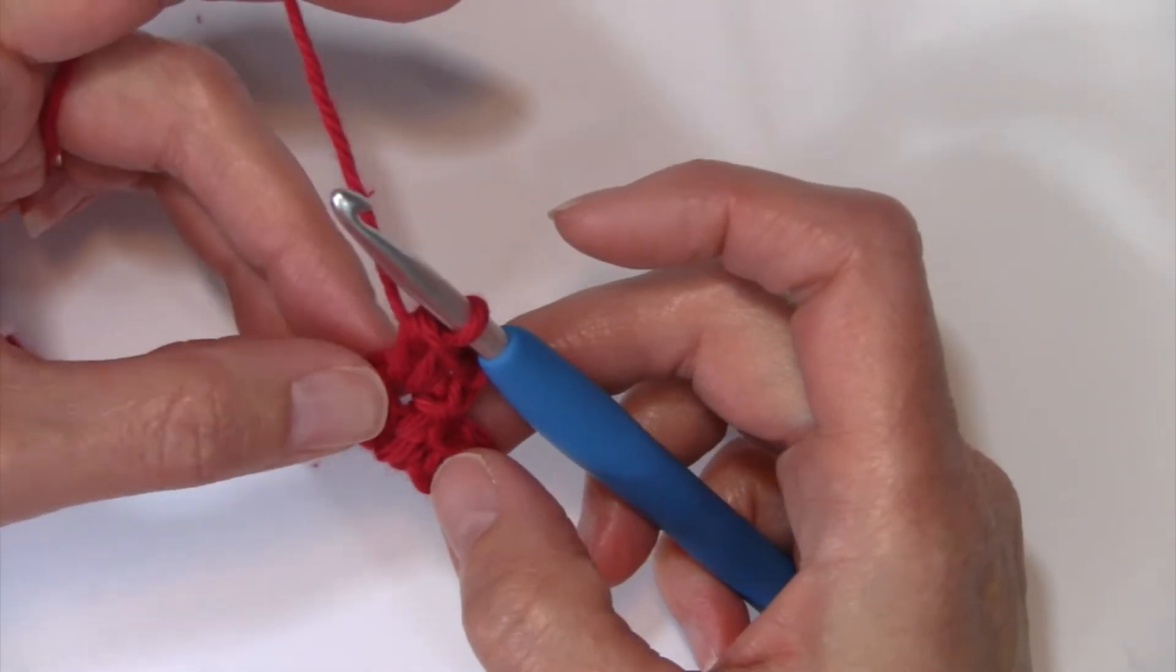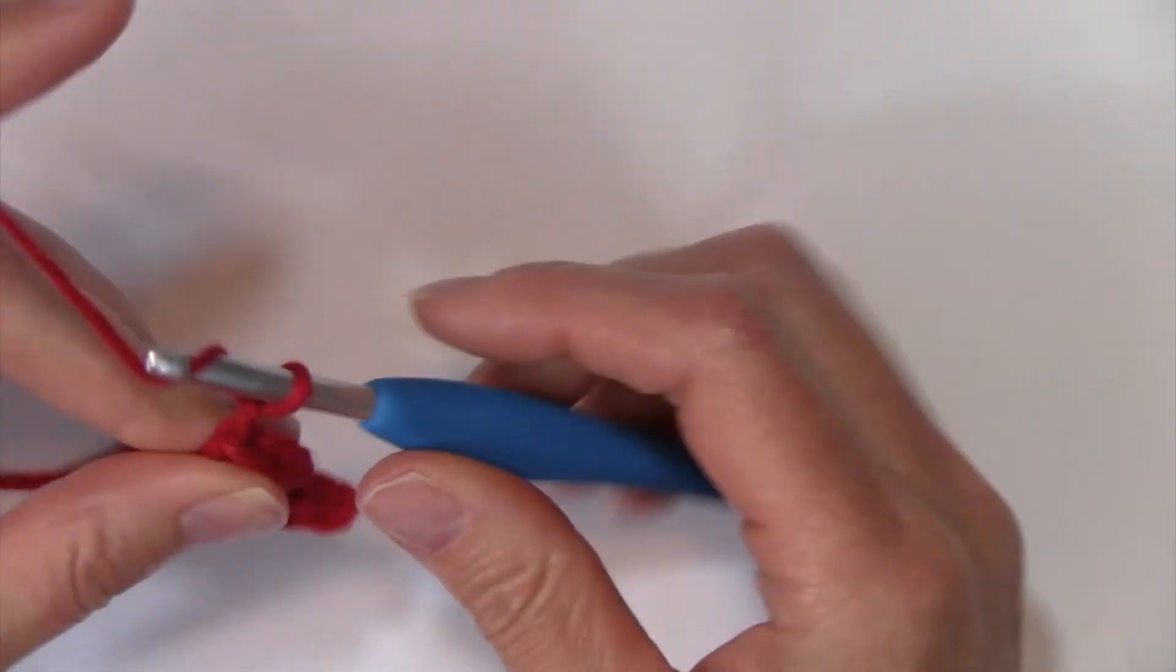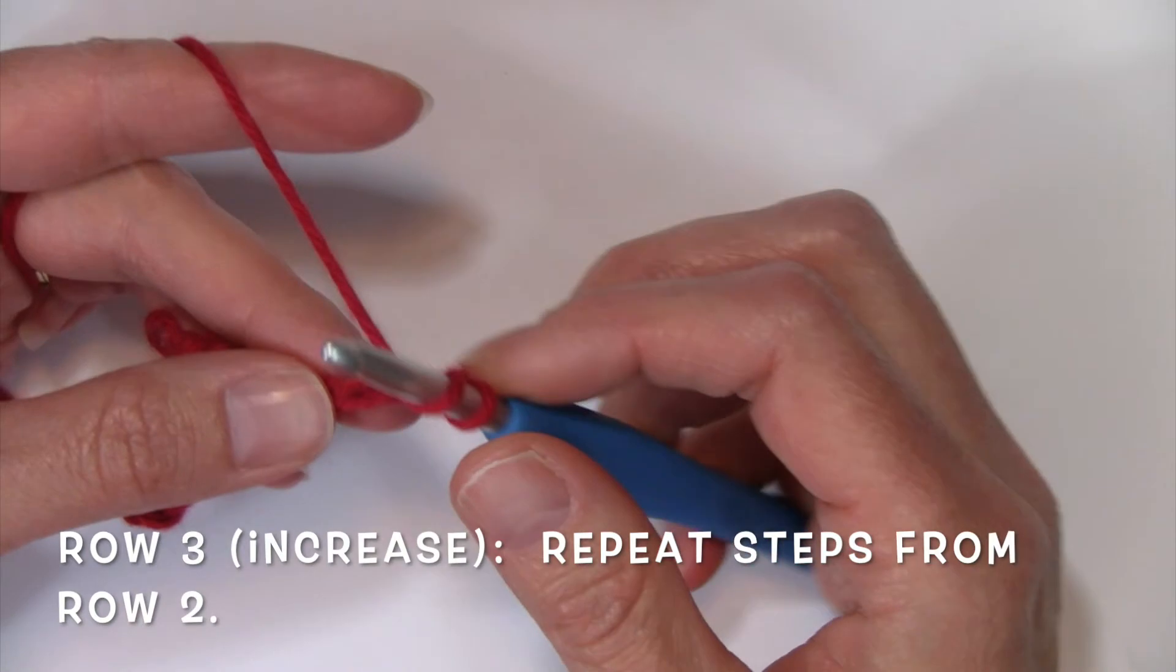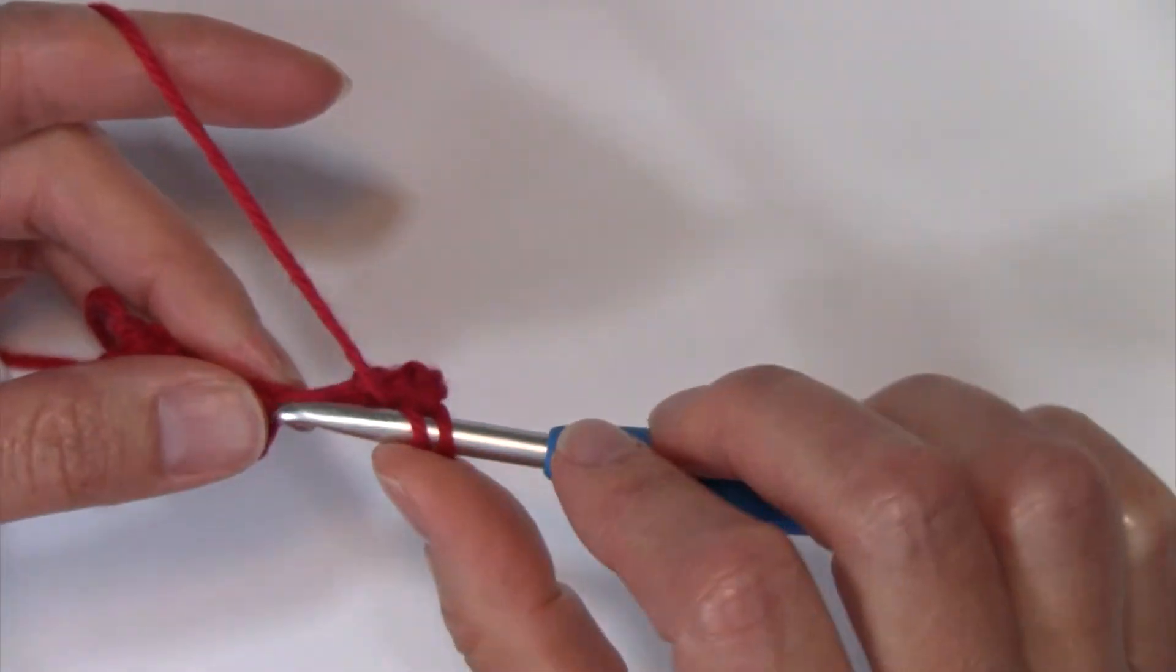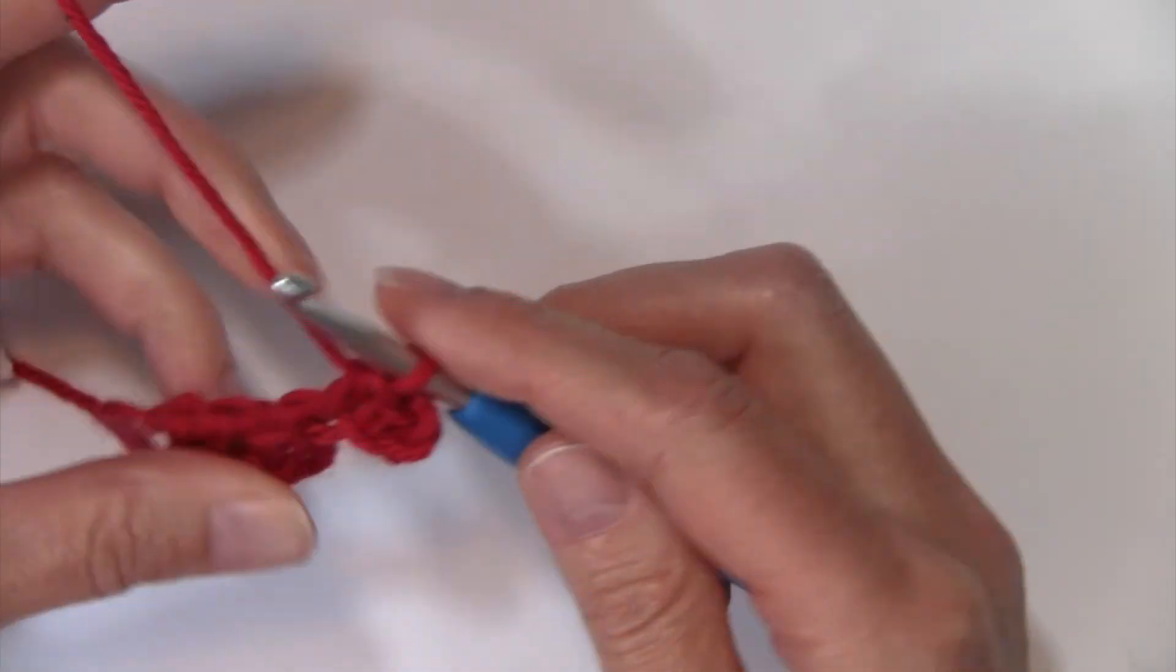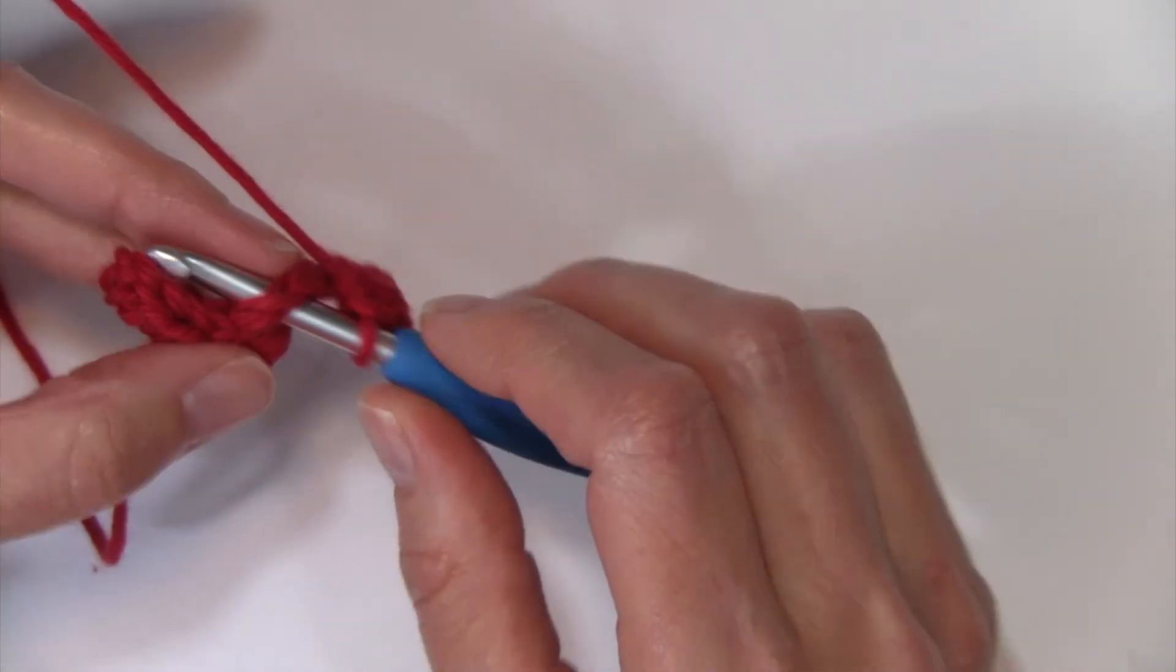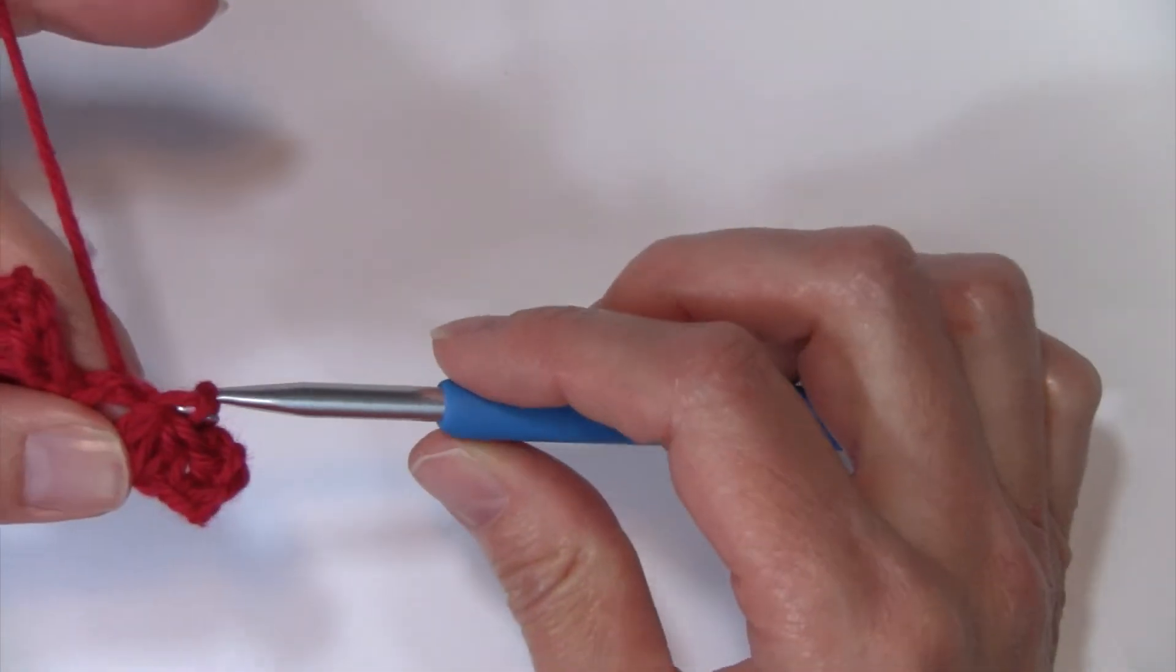Now we're going to increase for row three by chaining four, one, two, three, and four, and working two half double crochets in it again in those final two chains. So one in that third chain and one in the fourth chain from the hook.